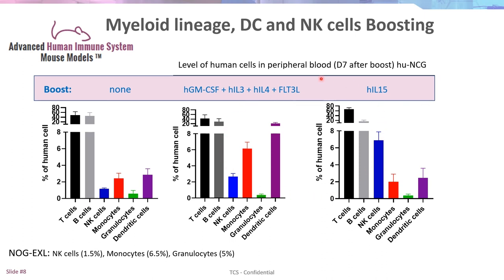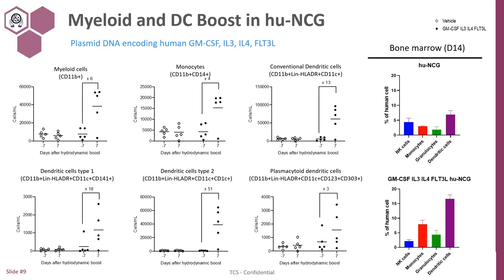We have also validated the fact that we can combine the two boosts in the same animals to get a bit more of everything, being more close to the situation in a real patient. Looking at percentages is informative, but sometimes percentages can be misleading, so having access to absolute counts is also key. You can see on this graph the absolute number of cells per ml of blood before and after the boost, showing an increase in the absolute level of myeloid cells, monocytes, and also conventional, plasmacytoid dendritic cells, DC type 1, DC type 2 — cells that were quite difficult to observe in non-boosted animals.